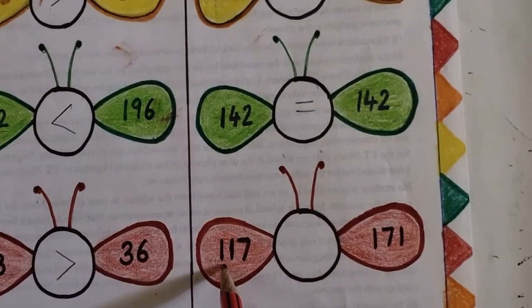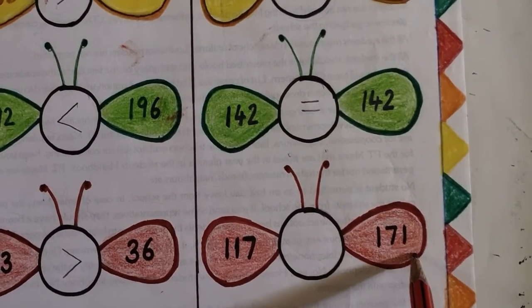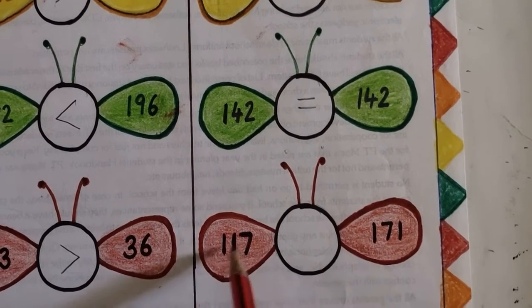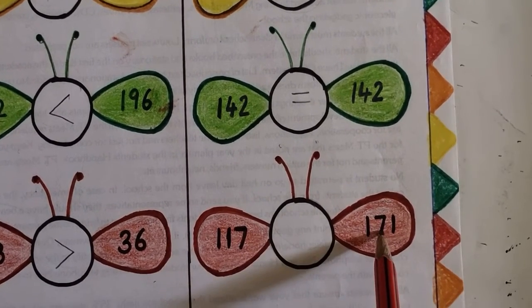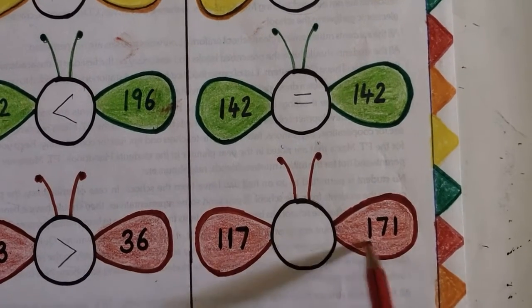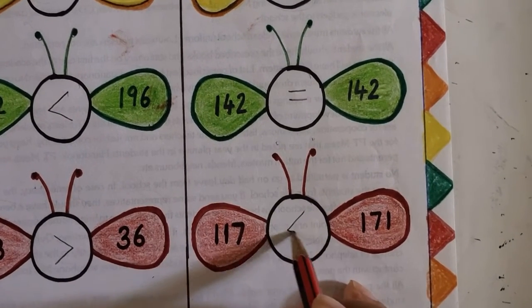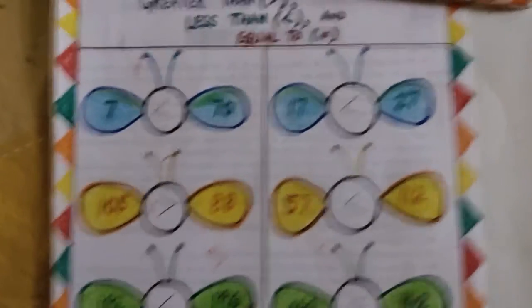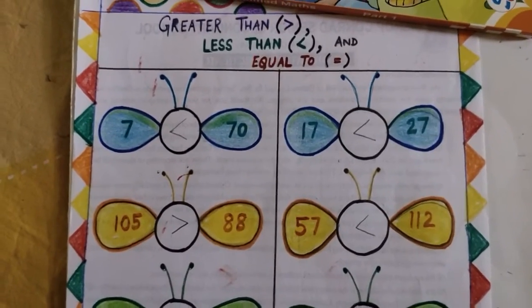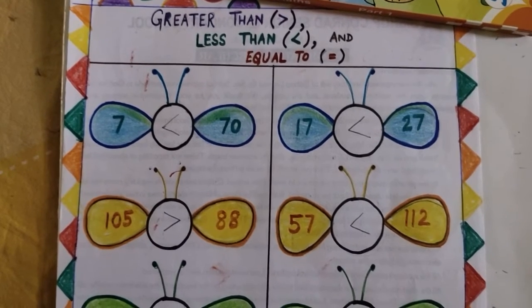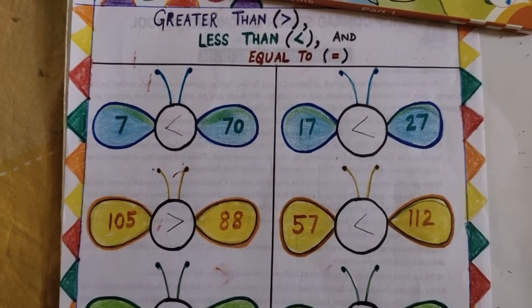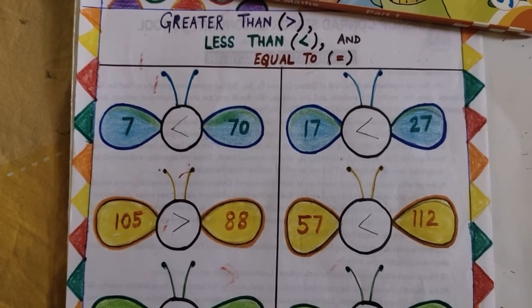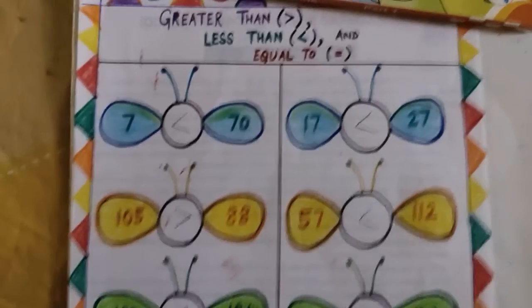Here again, 117 and 171. How will you find? 1, 1, these are equal. Then 1 and 7, which one is greater? 7. So this number is greater, so we will put this sign. Have you understood the concept of comparison of two numbers? I hope you have understood and you will not make any mistake next time. Okay, bye.